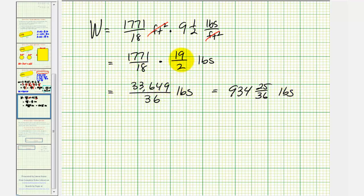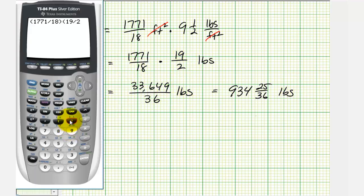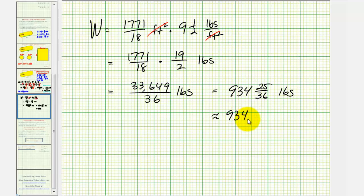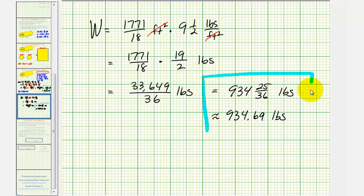Let's go to the calculator and verify this product. This gives us a decimal approximation of approximately nine hundred thirty-four point six-nine pounds. Pressing math, enter, enter, verifies our fractional answer is correct. So we've found the amount of steel required to construct the tank, as well as how much the tank would weigh if we use three-gauge steel. I hope you found this explanation helpful.